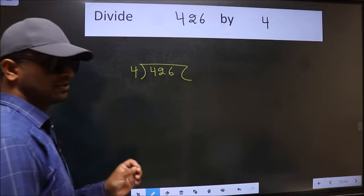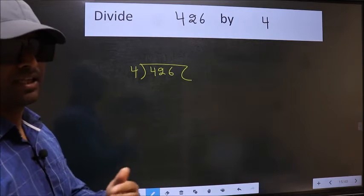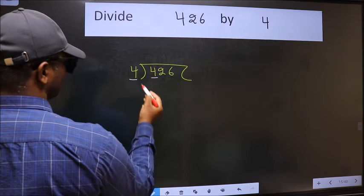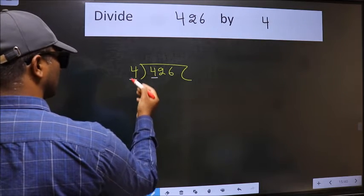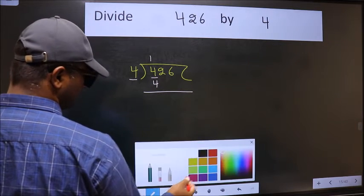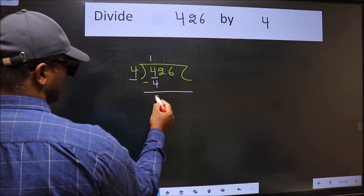This is your step 1. Next, here we have 4, here also 4. When do we get 4 in the 4 table? 4 once is 4. Now we should subtract. We get 0.